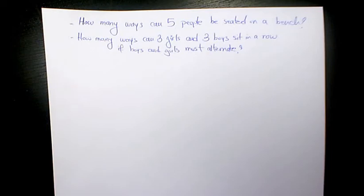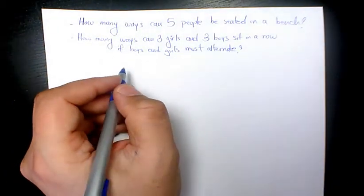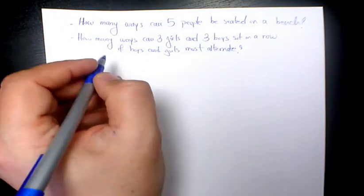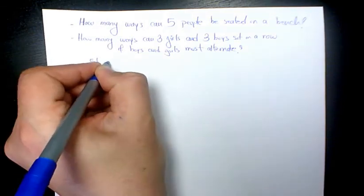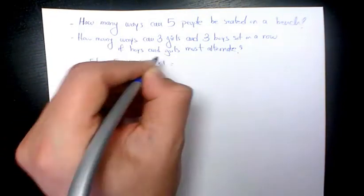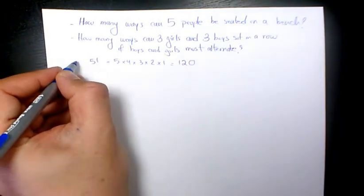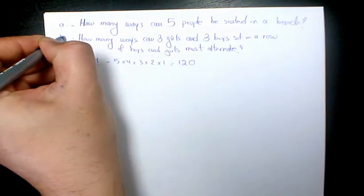The first one is easier and it's saying that how many ways can five people be seated on a bench. So it means that it's gonna be five objects to arrange, so we have just five factorial. It's gonna be 5×4×3×2×1 which will be 120.